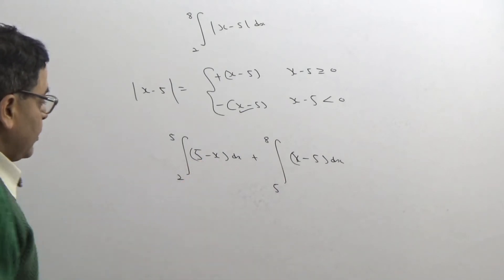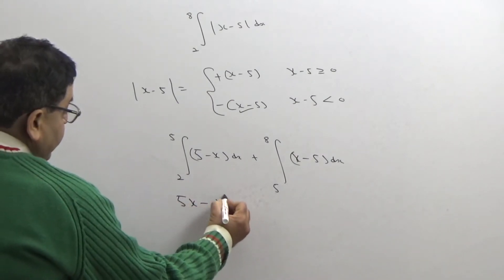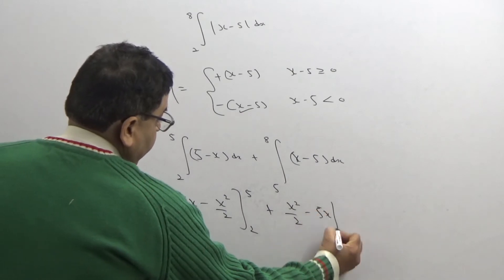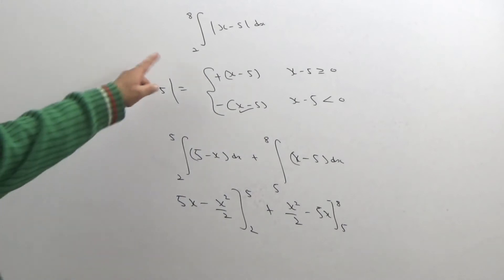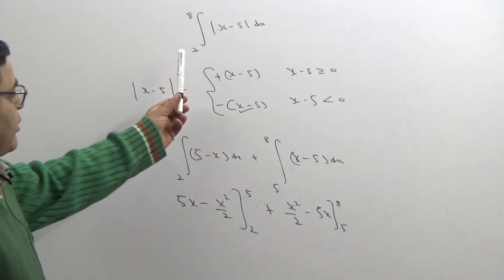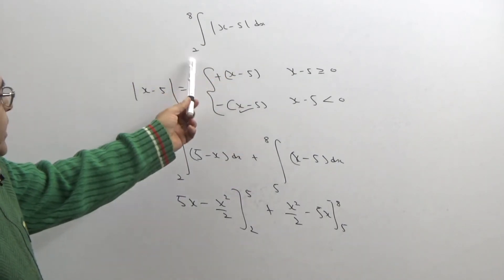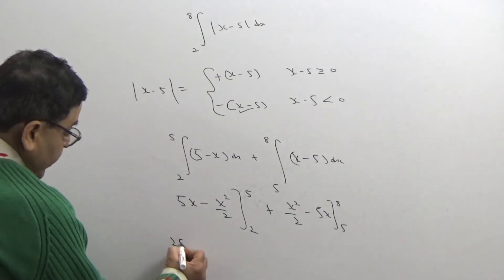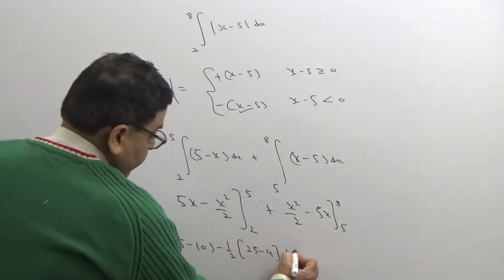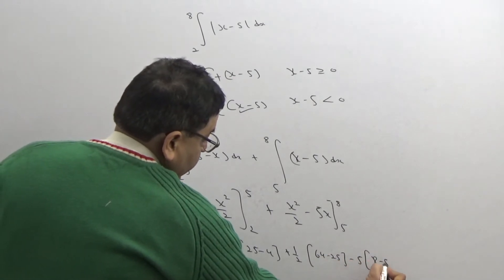Here the y-intercept is 5 and the other y-intercept is −5. Now integrating: the integral of 5 is 5x, the integral of x is x²/2, evaluated from 2 to 5; then x²/2 minus 5x evaluated from 5 to 8. When this type of question is given in class you will find many different answers from students, but you have to understand these answers must be positive because it is basically the area between 2 and 8.